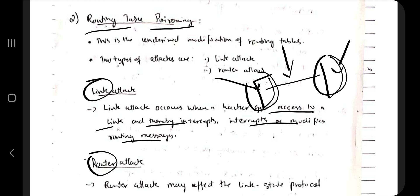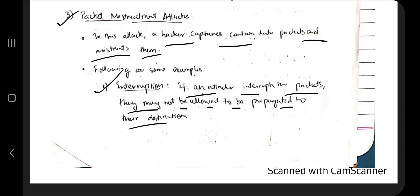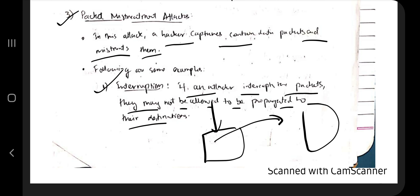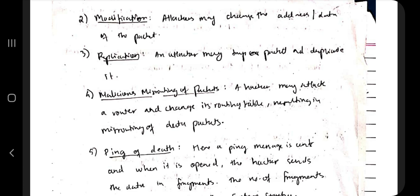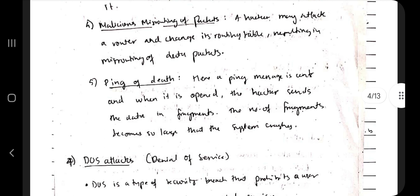The fourth type is the packet mistreatment attack, where the hacker captures data packets and modifies them. Sub-types include: interruption — intercepted packets are not allowed to propagate to the destination; modification — the hacker modifies the packet or creates duplicate packets; malicious misrouting — the data packet is sent to a different destination; and ping of death — a message that, once opened, hacks the device.